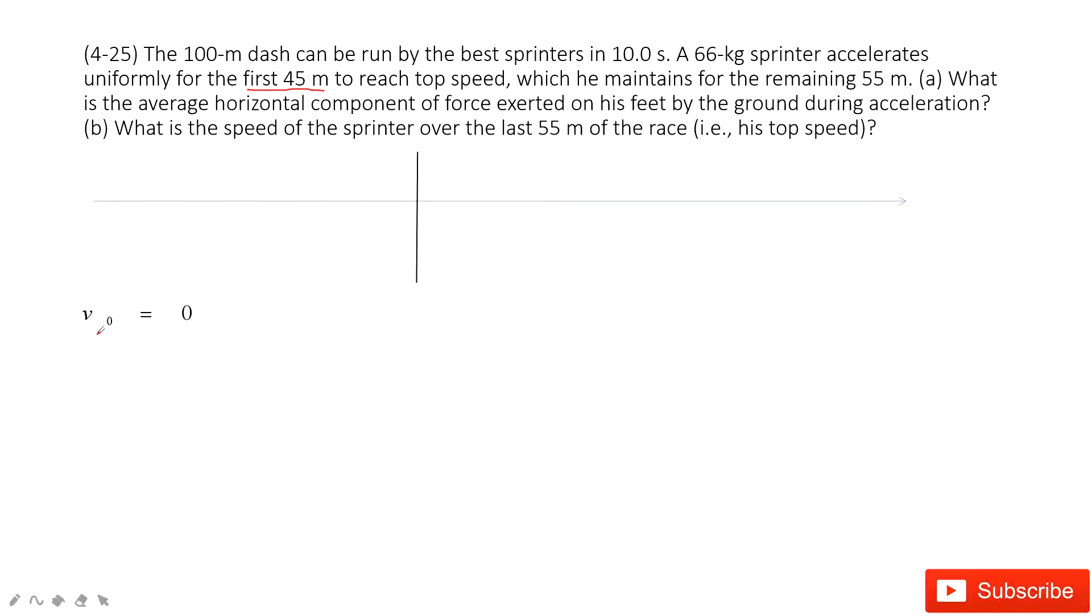So at the very beginning initial, the initial velocity is zero. And then the displacement at the first part, 45 meters, at the top speed, we consider it is V, and we don't know yet.